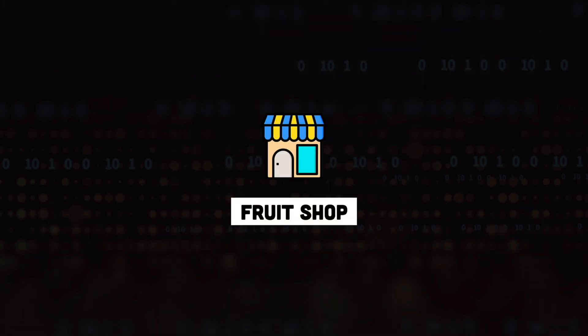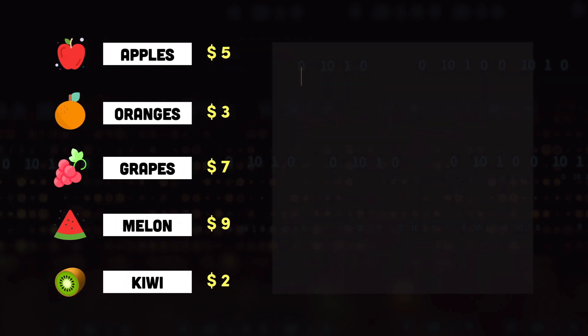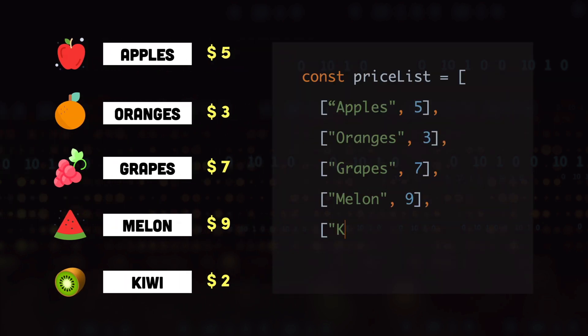Imagine we have a fruit shop and we are maintaining a price list for different fruits that we sell. Let's say that we are selling these five different fruits, and given in front of each of the fruits we have the price for that fruit. From the data structures we have covered so far in this series, we can use an array to represent the price list — an array of arrays where each item has two values: the name of the fruit and the price for that fruit.